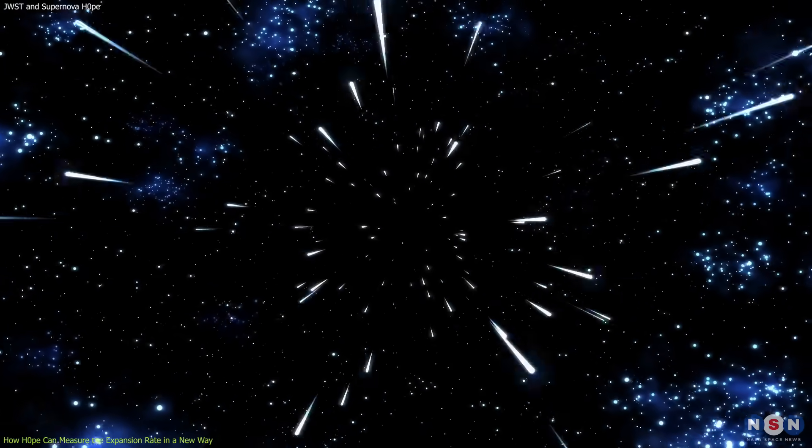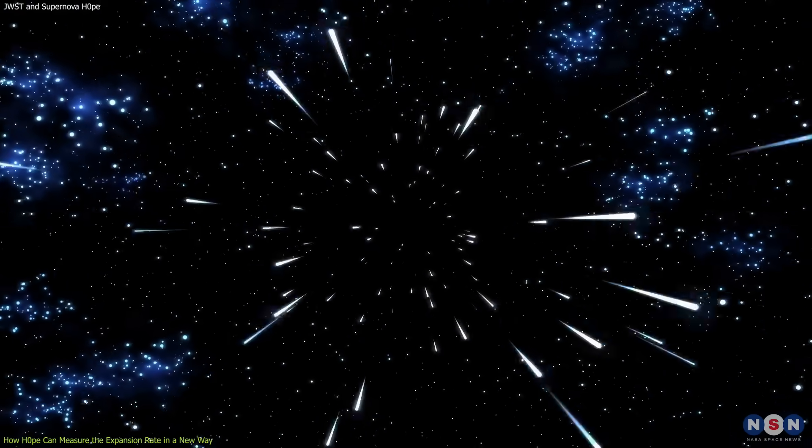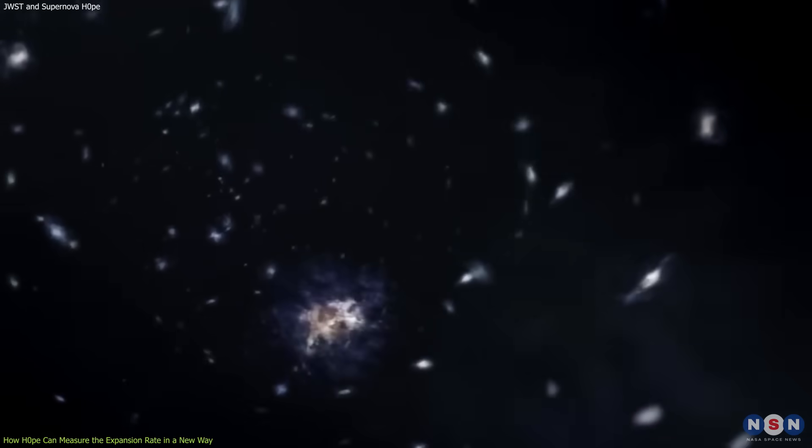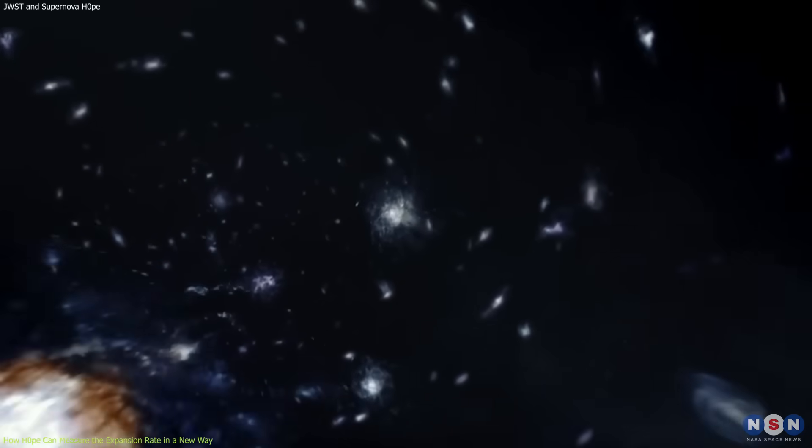This method gives a value of H0 of about 67 km per second per megaparsec, which means that for every megaparsec, about 3.3 million light-years of distance, galaxies are moving away from us at 67 km per second.